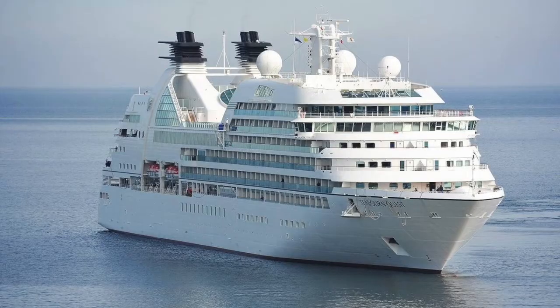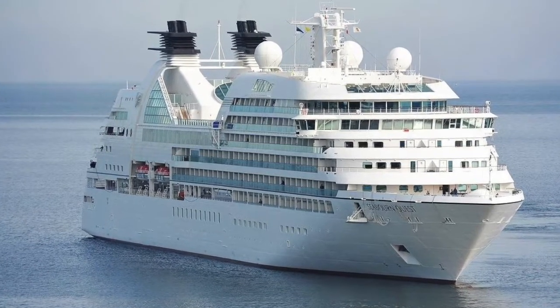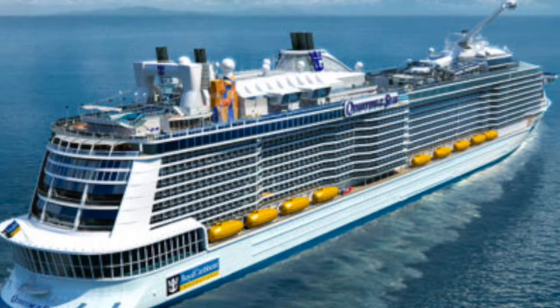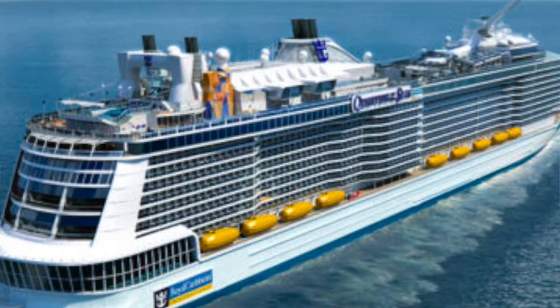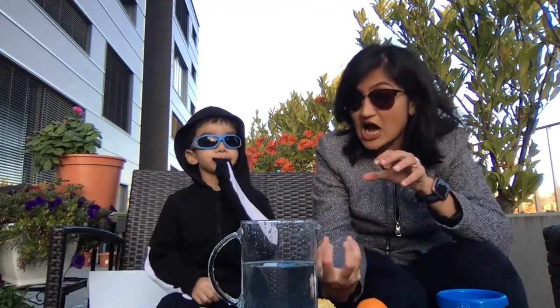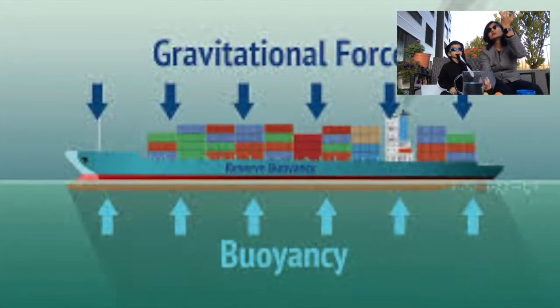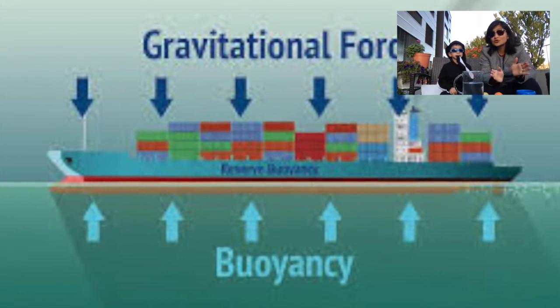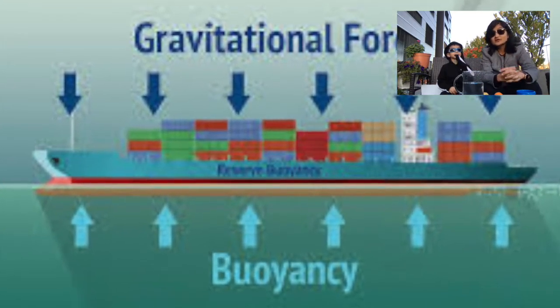Basically, the boat has to push the water aside so there is room for it. A boat has to displace water equal to its own weight to stay on the surface. Here comes another principle called buoyancy force, which is the opposite of the force of gravity. Gravity tries to pull it down; however, the buoyancy force keeps pushing it upwards. While the ship or boat is displacing the water, the force of buoyancy is in place.